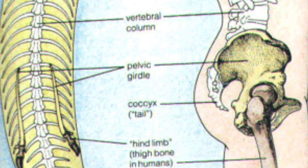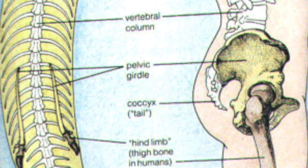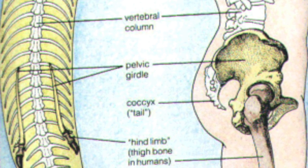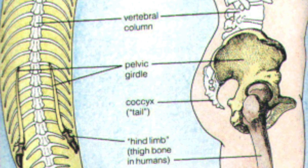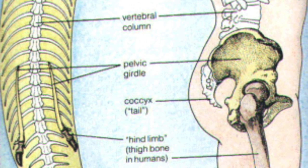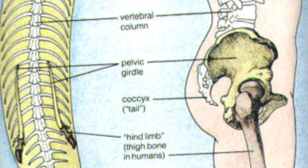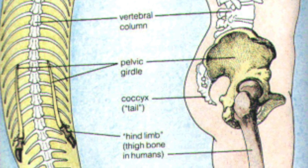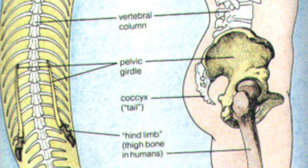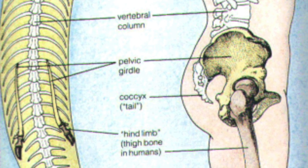These are the skeletal structures of snakes and humans. As you can see, the homologous structures include the vertebral column, which is known as the backbone for humans, and the pelvic girdle, and the hind limb, which are the thigh bones.